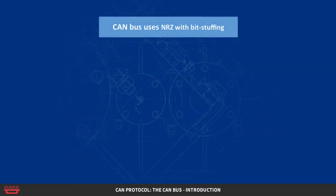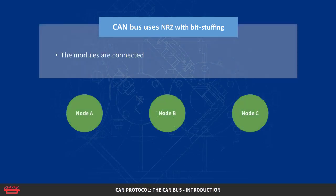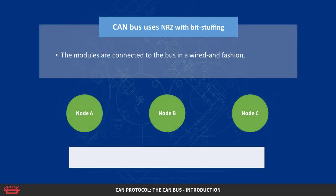The bus uses non-return-to-zero with bit stuffing. The modules are connected to the bus in a wired-AND fashion. If just one node is driving the bus to a logical zero, then the whole bus is in that state, regardless of the number of nodes transmitting a logical one.